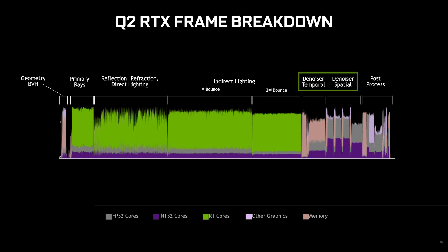The final step is denoising — taking that grainy image and resolving it to produce the final image. What we're showing here is the two kinds of denoising being done on the GPU: both spatial and temporal processing. Post-processing produces the final results for the screen — things like motion blur, depth of field, and bloom — and this consumes about 10% of overall frame time.